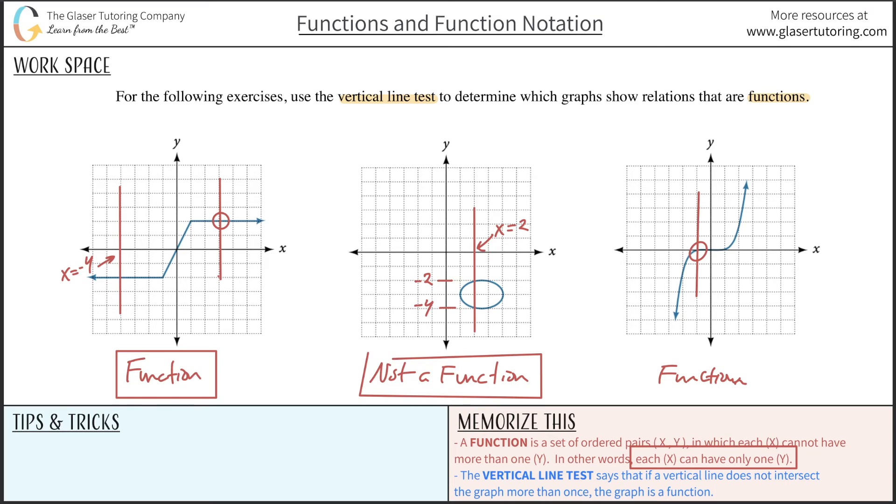That's how easy the problem should be. Just draw your vertical line. If it intersects one time or less, it's a function. If it intersects two times or more, it is not a function. Thank you very much for tuning in. Hope this video helped. Please remember to subscribe, and we'll see you in the next video. Take care.